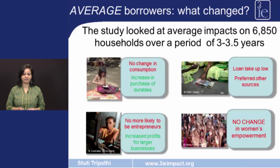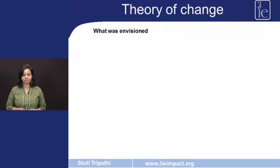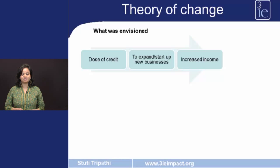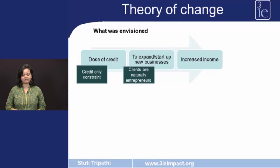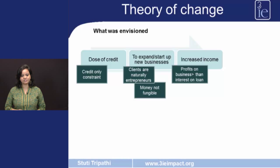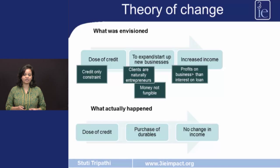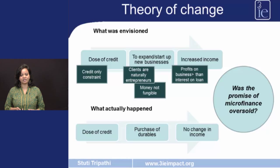So what went wrong with microfinance in this particular case? It's possibly the theory of change. What Spandana envisioned was that a dose of credit would be used by borrowers to expand an existing business or start a new one, leading to increased income. The assumptions were that credit is possibly the only constraint people face, that clients would be natural entrepreneurs, that money is not fungible, and that profits from business would exceed the interest paid on the loan. However, what actually happened was that the credit was used to purchase durables and there was no change in income. So was the promise of microfinance oversold?